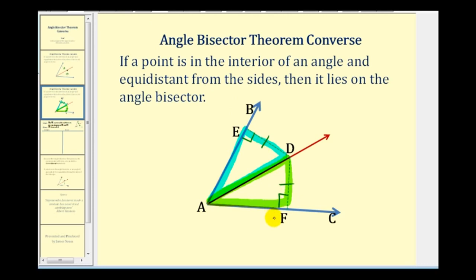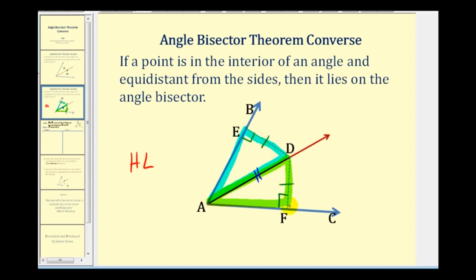If we can show that these two triangles are congruent, we can state that angle BAD is congruent to angle FAD, and therefore this ray would bisect the larger blue angle. The two right triangles share side AD, and segment AD is congruent to itself. Notice that the corresponding parts are side-side-angle, and side-side-angle does not prove triangle congruence. However, since these are right triangles, we can prove they're congruent by the hypotenuse-leg congruence theorem.